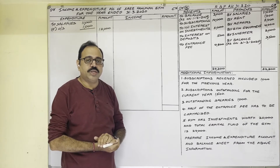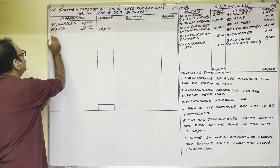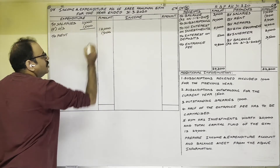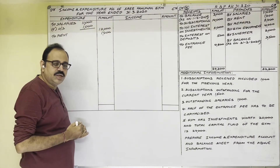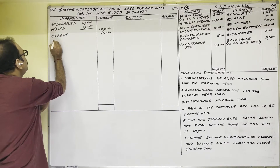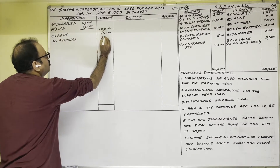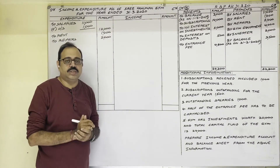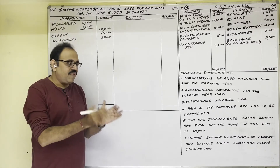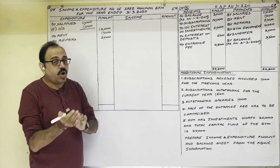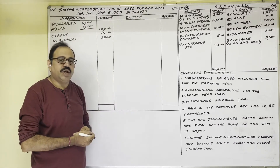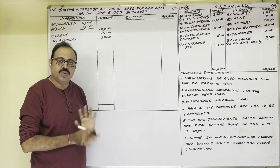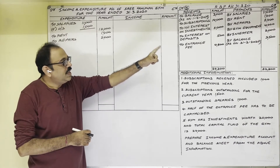Next, repairs 2,400 — regular expenditure, revenue expenditure; debit side, outer column 2,400. Next, gym equipment: they do not purchase gym equipment regularly — it is used for more than one year, so it is capital expenditure. Gym equipment is a fixed asset and must be shown in the balance sheet under assets, not here — ignored. Next, inverter 2,000 — this is also a fixed asset, capital expenditure; show in balance sheet under assets, not here — ignored.